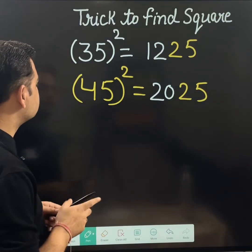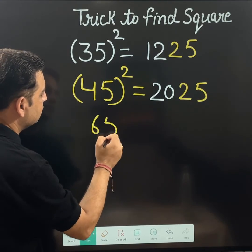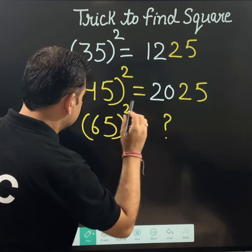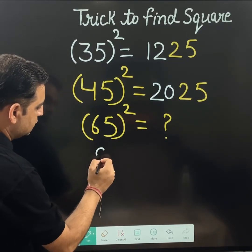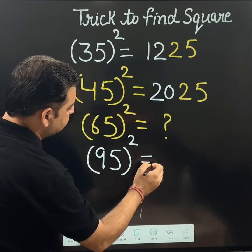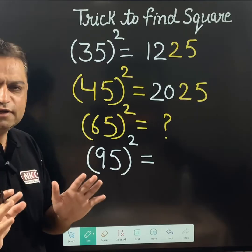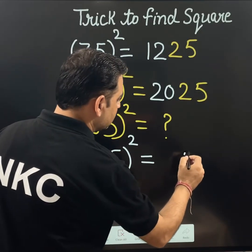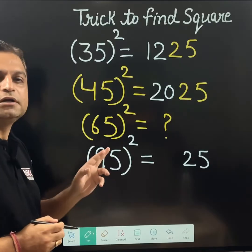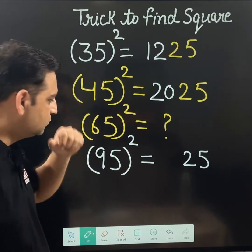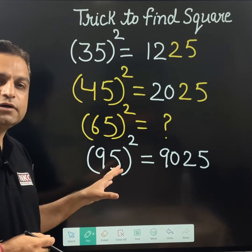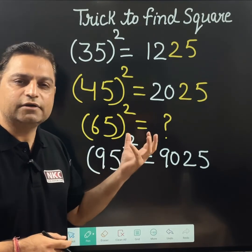I am giving one question to you to try — please try out 65 squared. I am going to do 95 squared now using the same rule. 5 squared is 25, and 9 should be multiplied with the next value. 9 times 10 is 90. So 9025 is the answer for 95 squared.